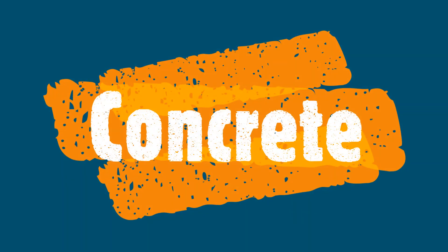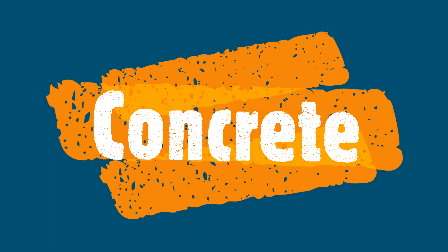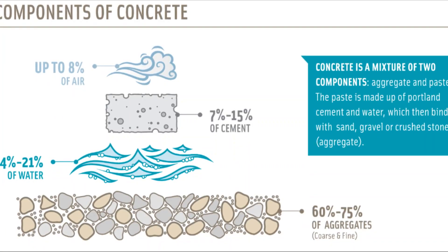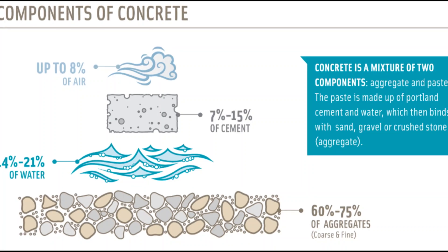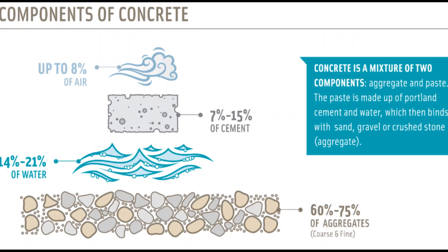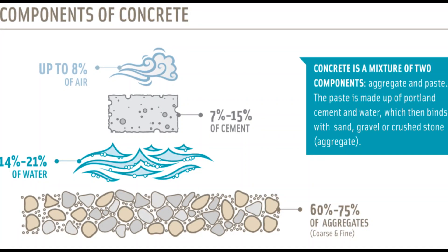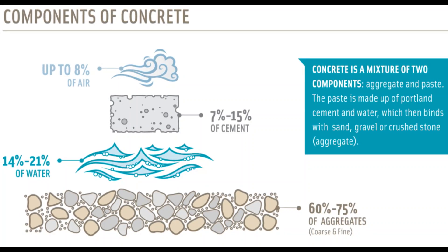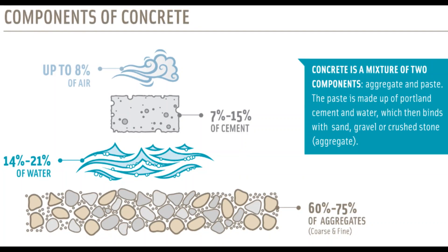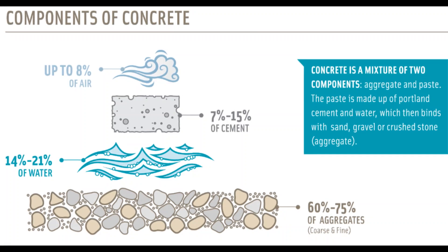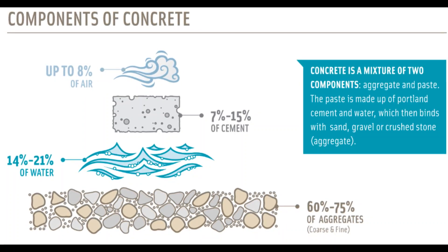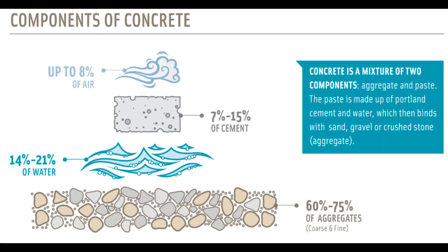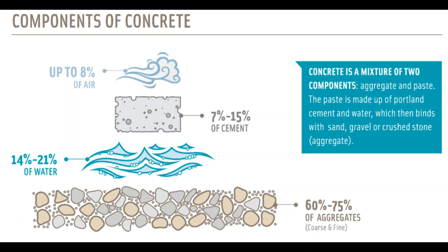Now let's discuss more about concrete. Concrete is a nanostructured, multi-phase, composite material that ages over time. It is composed of water, aggregates, and Portland cement — aggregates being sand, gravel, or crushed stone. Cement, usually in powder form, acts as a binding agent when mixed with water and aggregates.